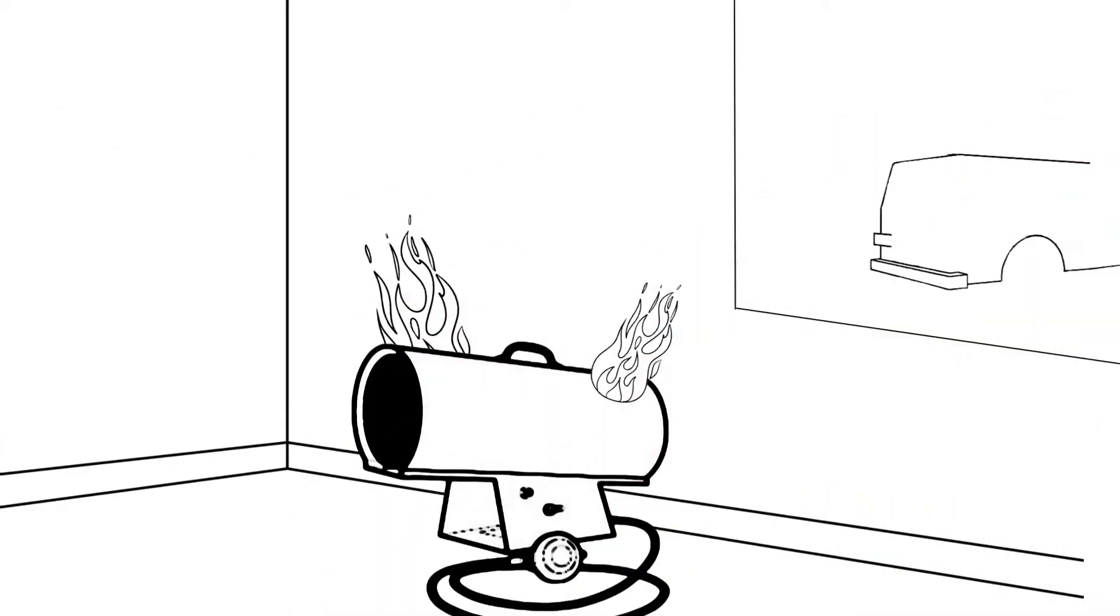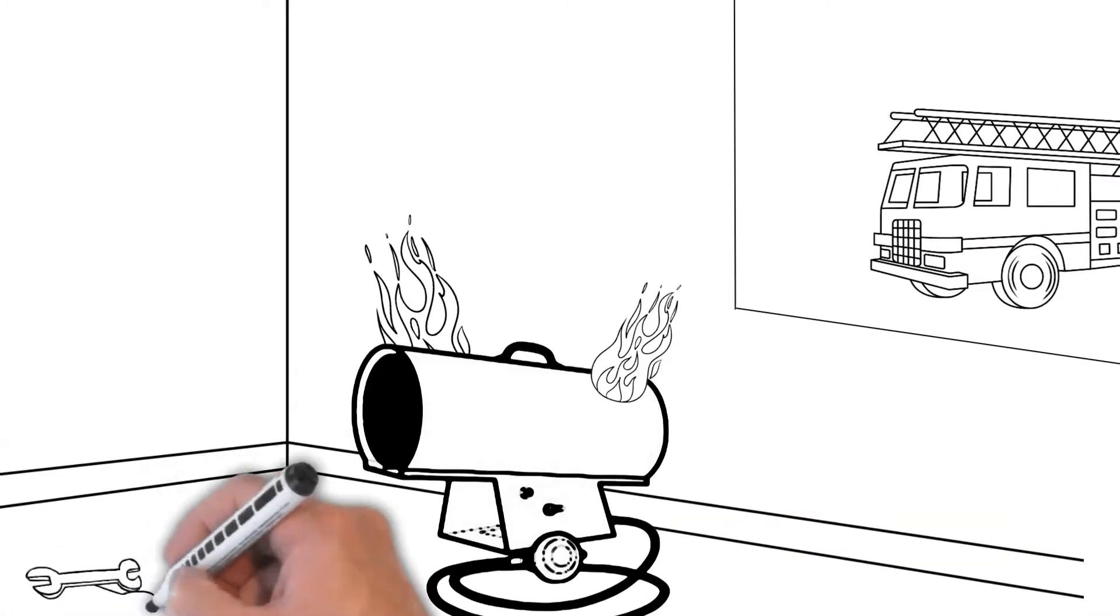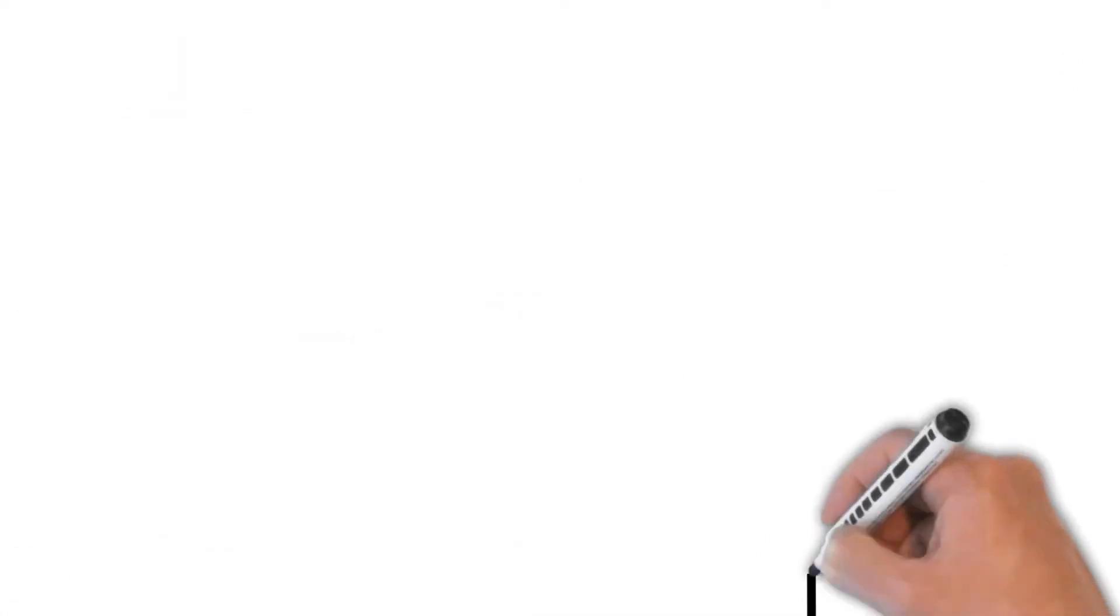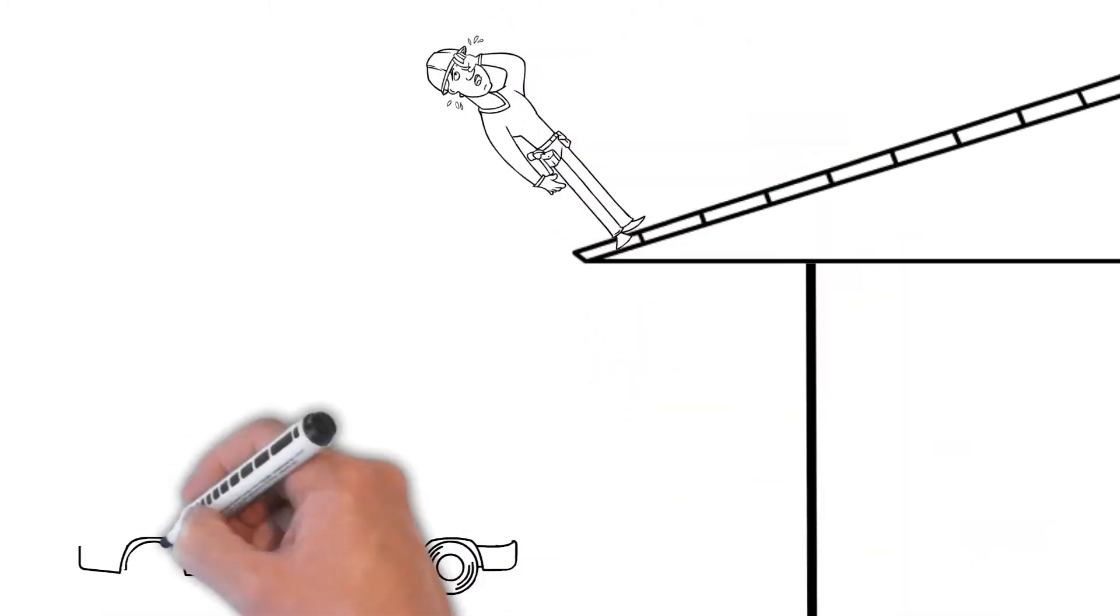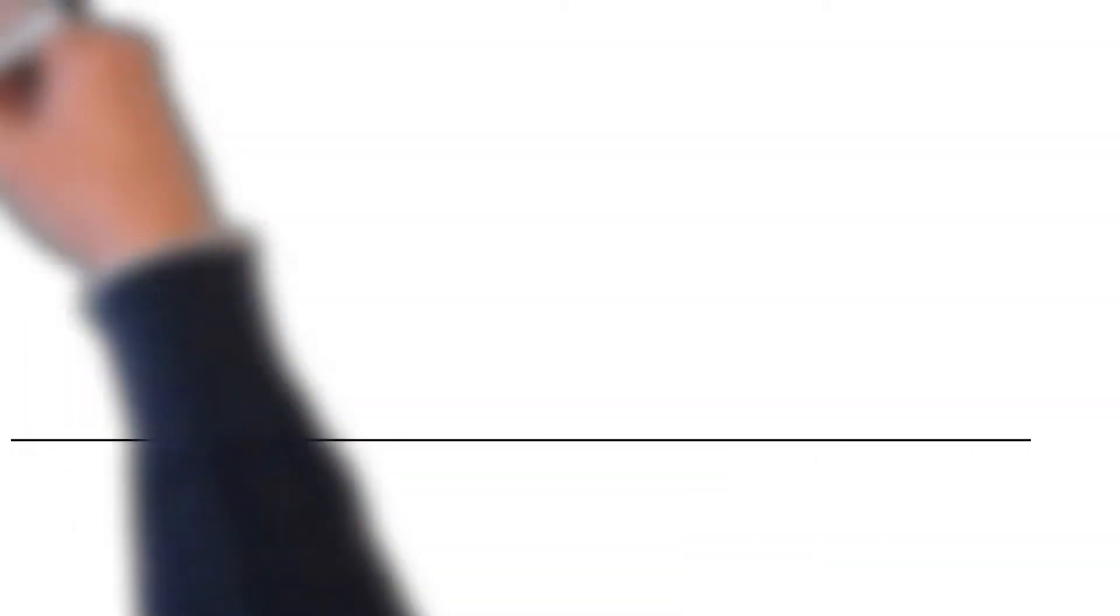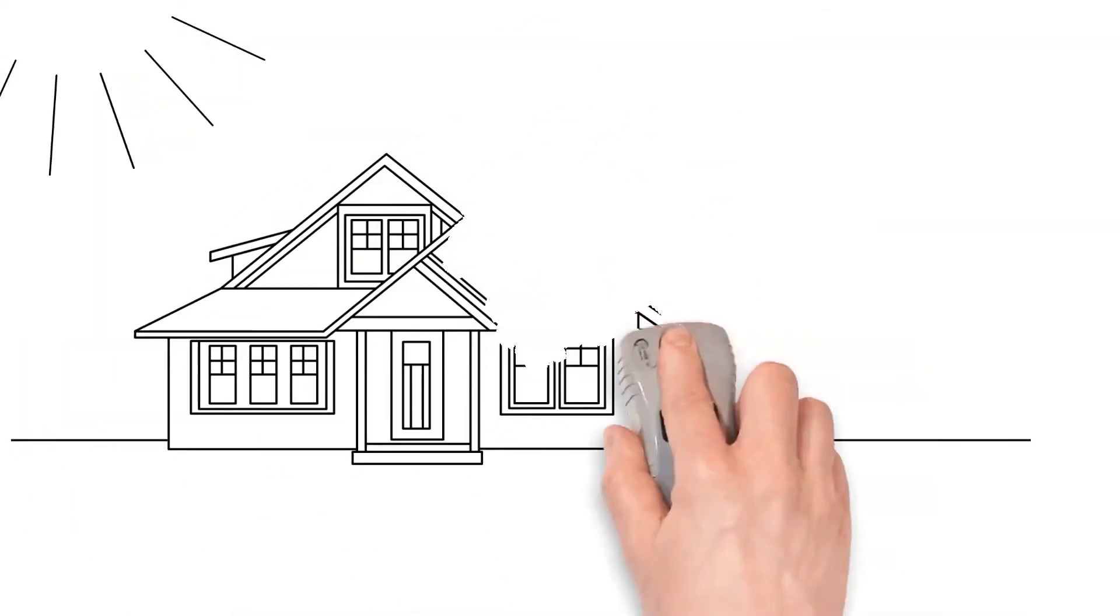For example, unattended space heaters can quickly start fires. Trailers left unattended increase the risk of theft. Unexpected accidents like falls from heights can lead to serious injury or fatalities. And falling trees could make you liable for your neighbor's property damage.